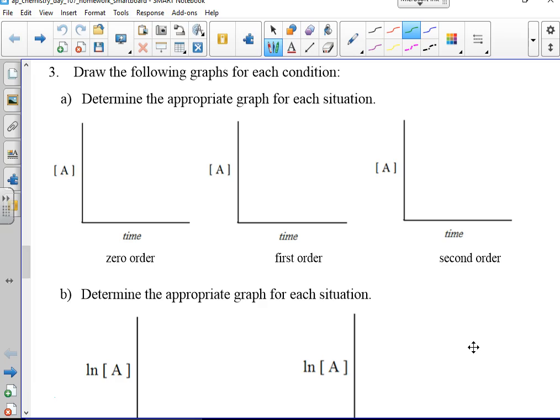So when we look at this, how would I construct this first graph here? So it's a zero order, and it's concentration versus time. How would that look? Negative slope. I'll do the best I can to be straight there. Okay. Now, is it close enough? It'll work.